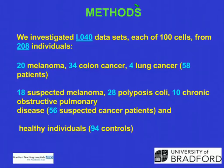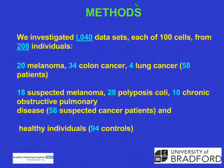These are the methods we used. We investigated 1,040 data sets, each of 100 cells from 208 individuals, with each individual having five observations. In this study, we looked at 20 melanoma patients, 34 colon cancer patients, and 5 lung cancer patients — a total of 58 cancer patients. We also looked at 18 suspected melanoma, 20 polyposis coli, and 10 chronic obstructive pulmonary disease patients — 56 suspected cancer patients in total — and 94 healthy individuals.